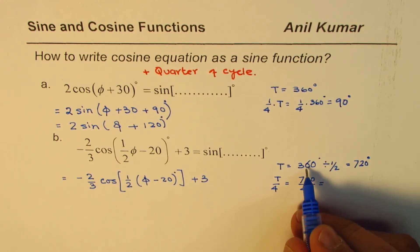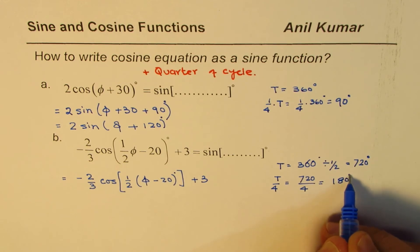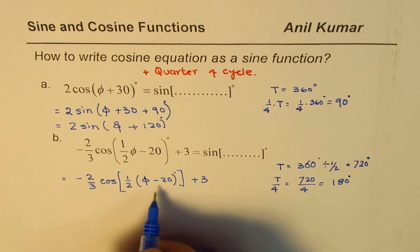...is half is 360 and half is 180 degrees. So one-fourth is 180 degrees. We have to add this up.